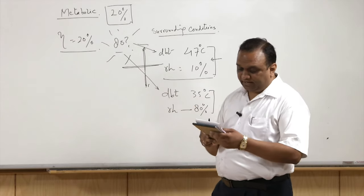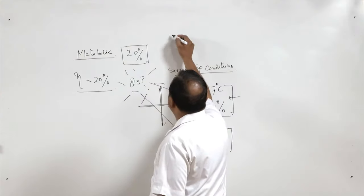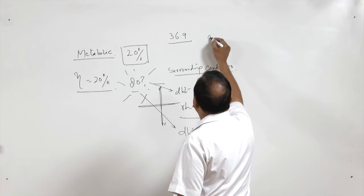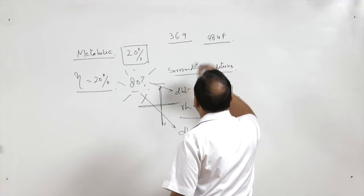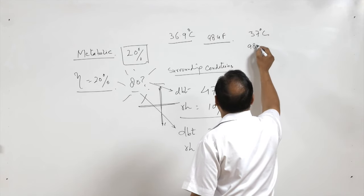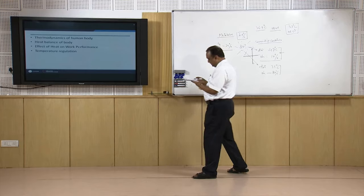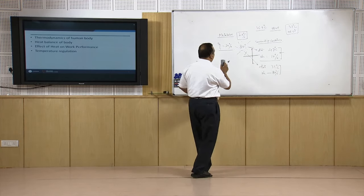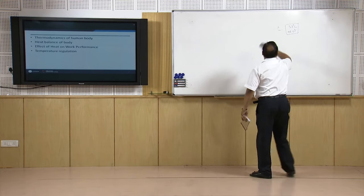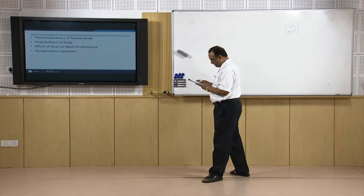Body temperature has to be maintained constant. Our body temperature is 37 degree centigrade — earlier it was stated as 98.4 Fahrenheit, but now it has been corrected to 37 degree centigrade or 98.6 Fahrenheit. Our body is a homo-exothermic machine and the body temperature has to be maintained constant under all environmental conditions.